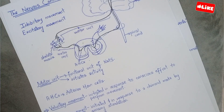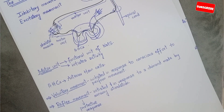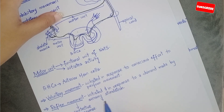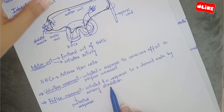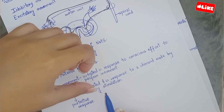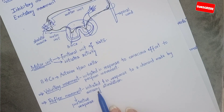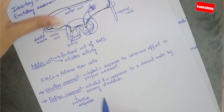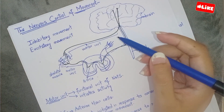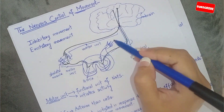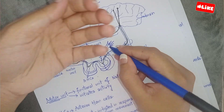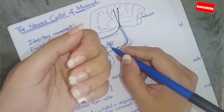Reflex movement is a protective response that has saved us from burning. This is the response to sensory stimulation. Reflex movement is understood by its definition: it is the response to sensory stimulation.